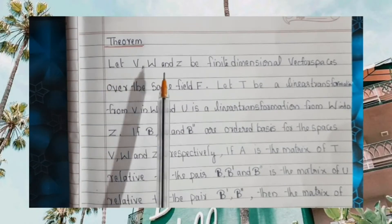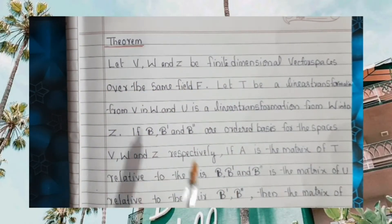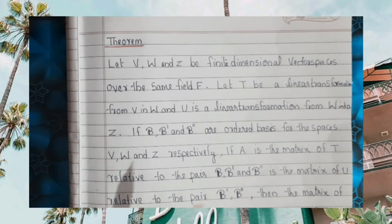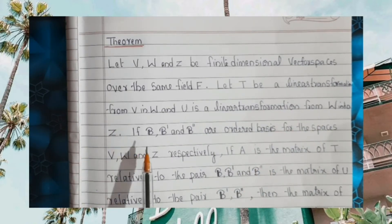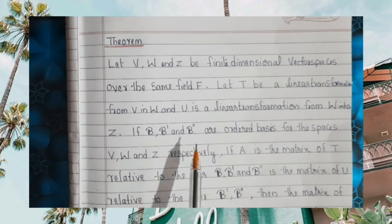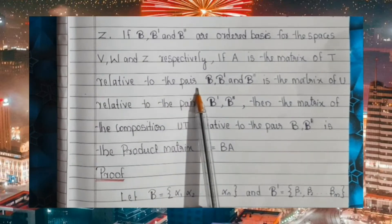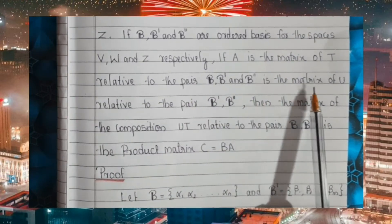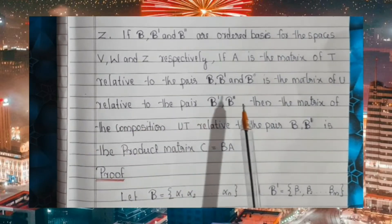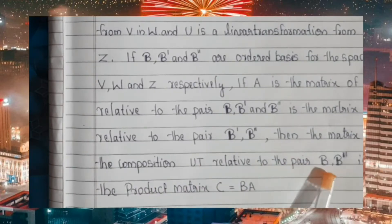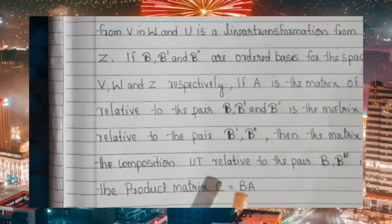Theorem: Let V, W and Z be finite dimensional vector spaces over the same field F. Let T be a linear transformation from V into W, and U is a linear transformation from W into Z. If B, B' and B'' are ordered bases for the spaces V, W and Z respectively. If A is the matrix of T related to the pair B, B' and B is the matrix of U related to the pair B', B'', then the matrix of the composition UT related to the pair B, B'' is the product matrix C equal to BA.